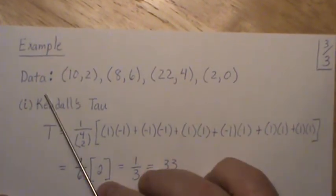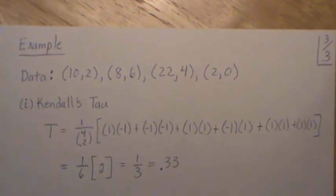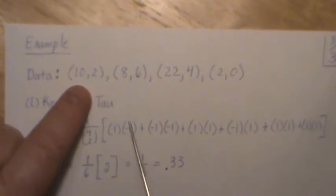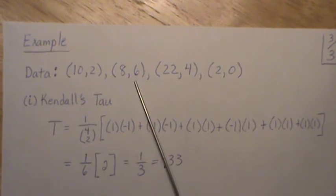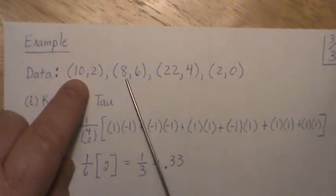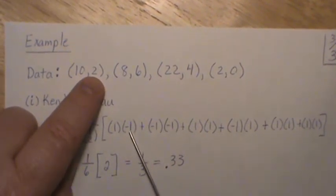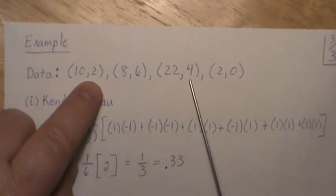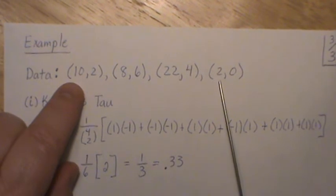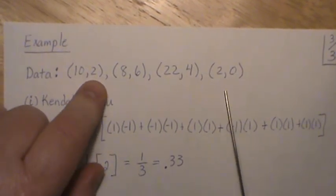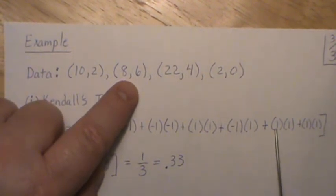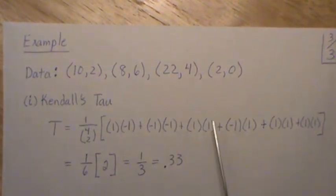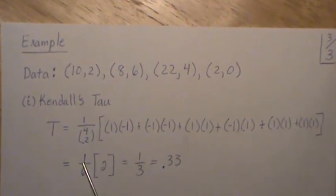Let's do an example with four data points and calculate Kendall's tau. It's 1 over C(4,2) = 1/6, then we look at each pair. Pair (10,2) vs (8,6): (10−8) is positive, (2−6) is negative — product negative. Pair (10,2) vs (22,4): (10−22) negative, (2−4) negative — product positive. Pair (10,2) vs (2,4): positive and positive. Then the remaining pairs each give positive products. The sum equals 2, so tau = 2/6 = 1/3 ≈ 0.33.